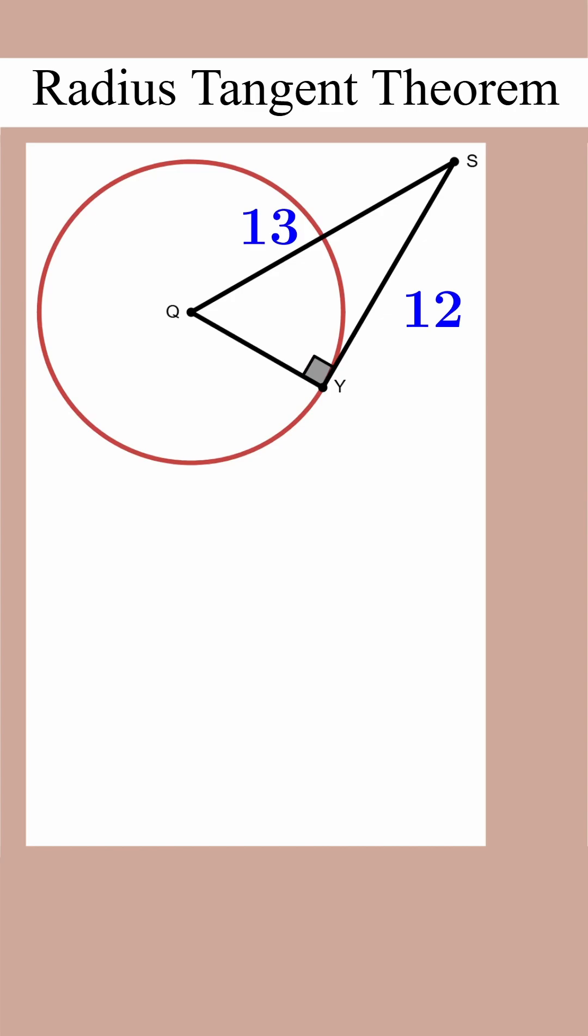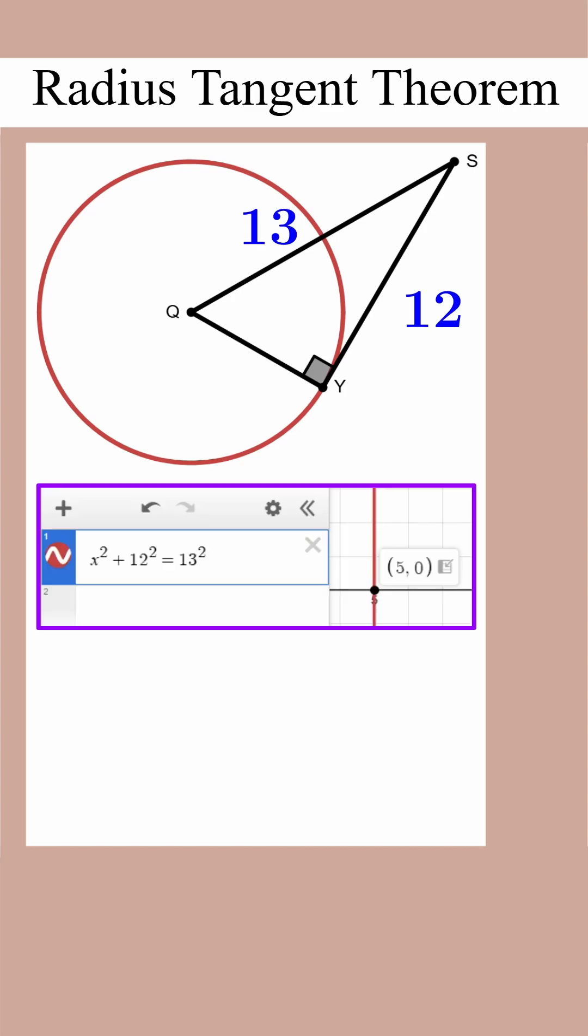Now to find the radius, we can find the length of segment QY by using the Pythagorean Theorem, and we see that the radius is 5. Using the area formula, we get an area of the circle of 25π.